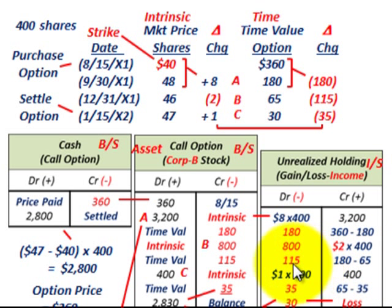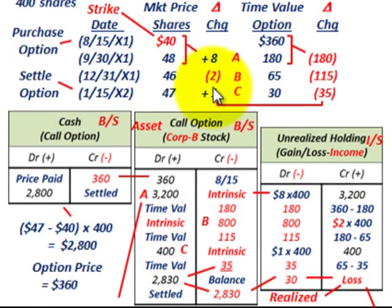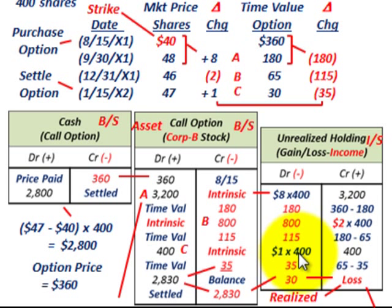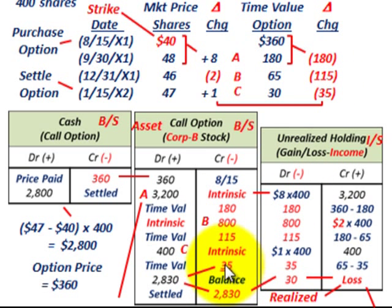Looking at our last period, we were at $46 per share and went up to $47 per share, so we had an increase of $1 per share. The time value went down from $65 to $30, a decrease of $35. For the intrinsic value, we debit the call option by $400 — $1 times 400 shares — and credit unrealized holding gain $400. For the time portion, we credit our call option by $35 and recognize an unrealized holding loss of $35.